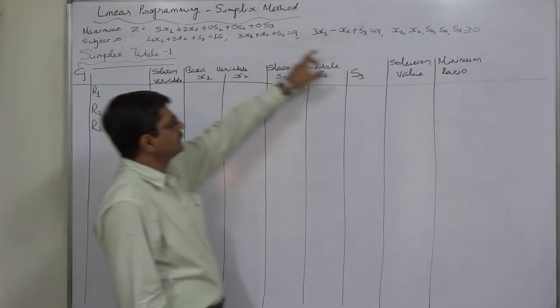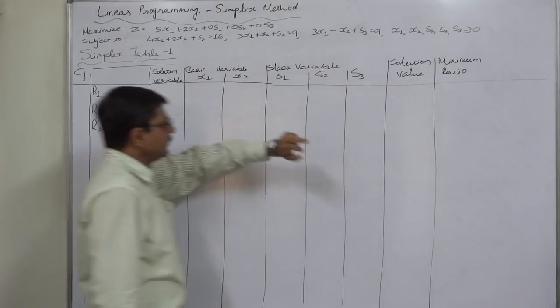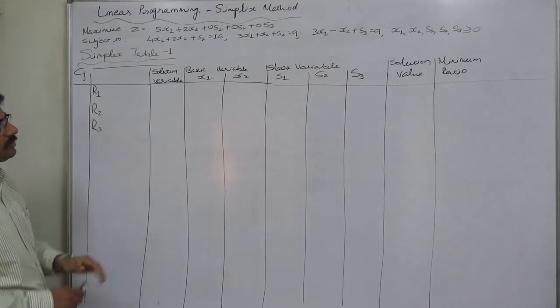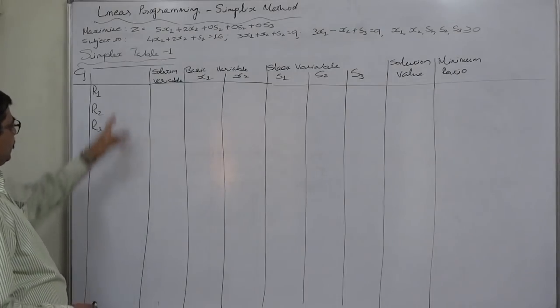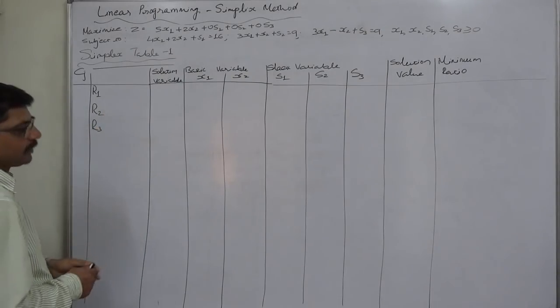Since we have three constraints in this problem there will be three rows in the simplex table. In the first simplex table they will form R1, R2, R3.